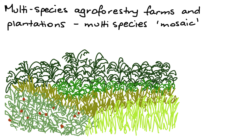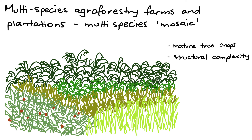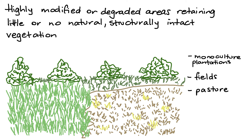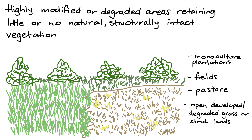Category 3: Multi-species agroforestry farms and plantations comprising a multi-species mosaic, largely dominated by mature tree crops and retaining some structural complexity, with a coefficient of 0.4. Category 4: Areas that are highly modified and/or degraded, retaining little or no natural structurally intact vegetation. These include monoculture plantations, permanent fields, pasture, and open developed and/or degraded grass or shrublands, with a coefficient of 0.